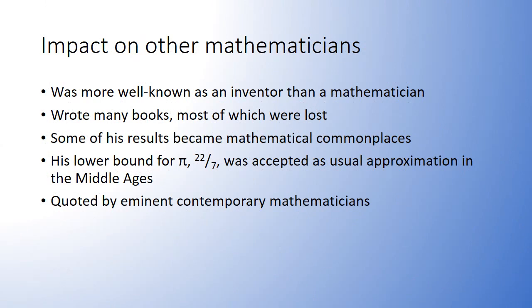Archimedes was more well known as an inventor than as a mathematician in his time. He wrote many books or treatises about his work, but most were lost. Some of his research, including the volume and surface area of the sphere, was accepted as commonplace, while his lower bound for pi, 22/7, was accepted as the usual approximation in the Middle Ages. His work was studied at Alexandria by eminent mathematicians Hero, Pappus, and Theon, who quoted him many times.